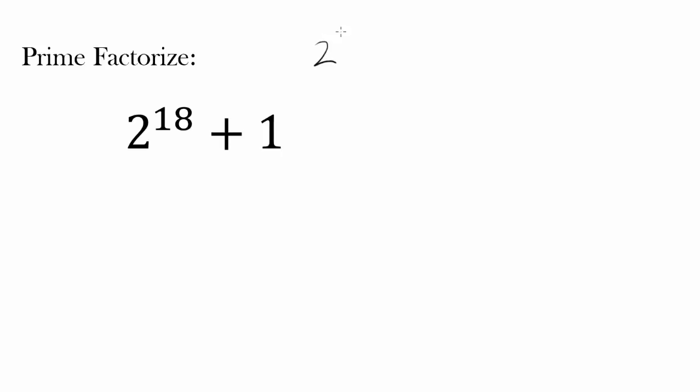If this was 2 to the 18th minus 1, then the first place to go is pretty obvious. You can factor it as difference of squares, 2 to the 9th minus 1 and 2 to the 9th plus 1, and go on from there.